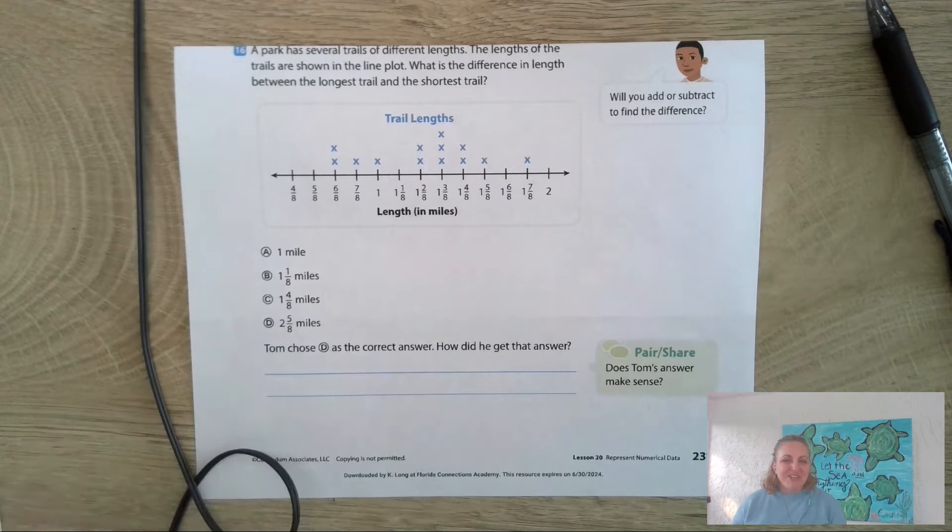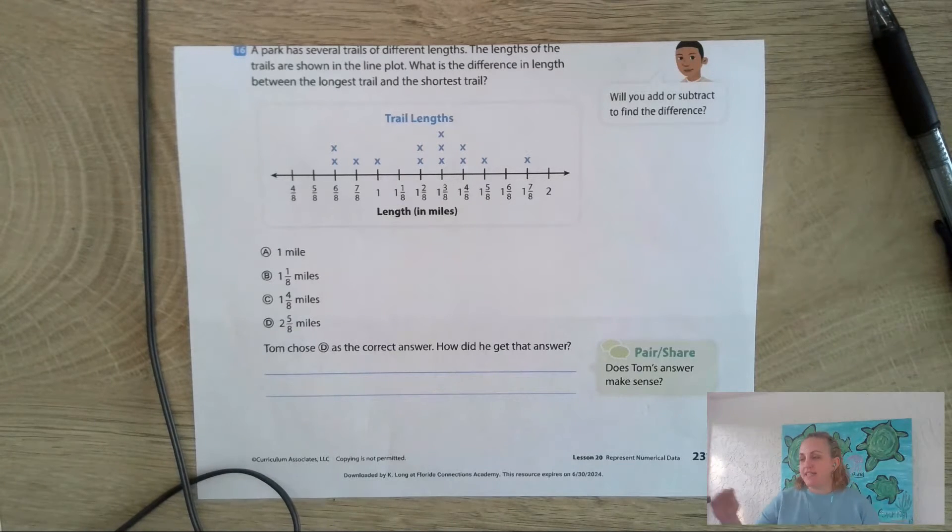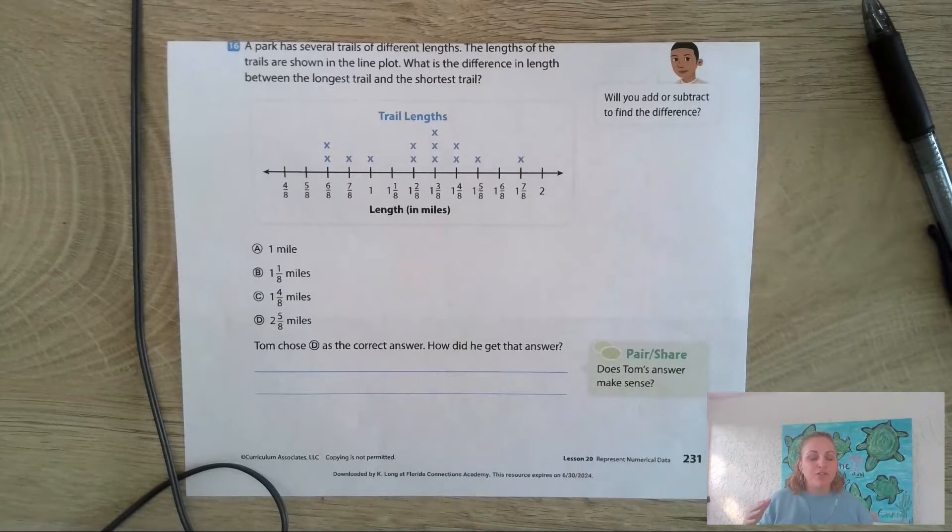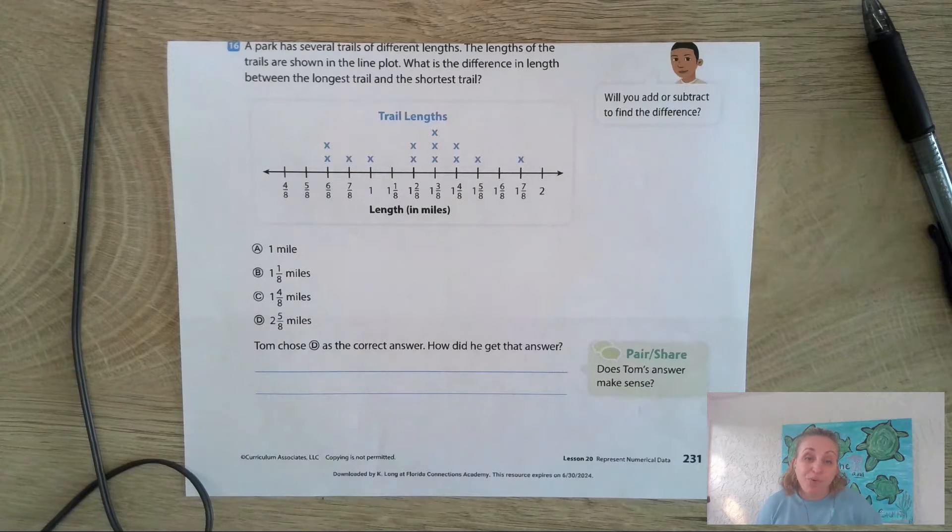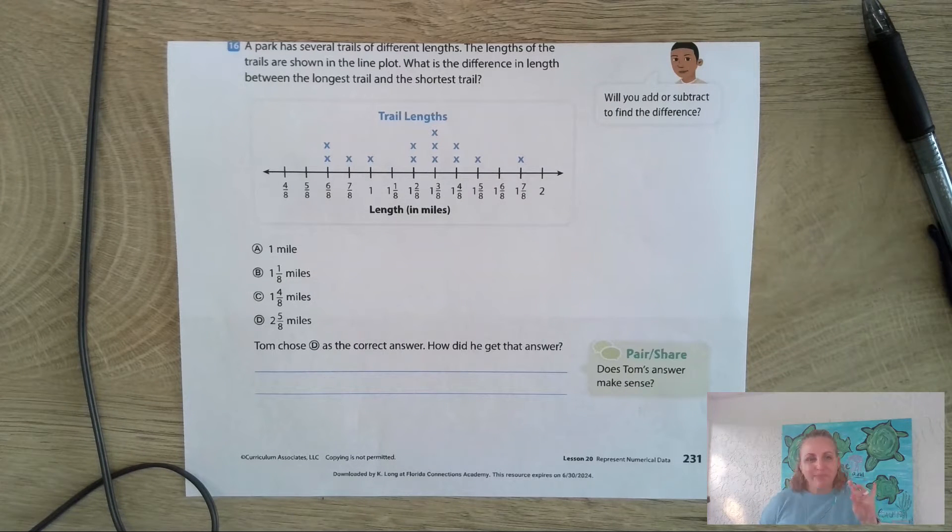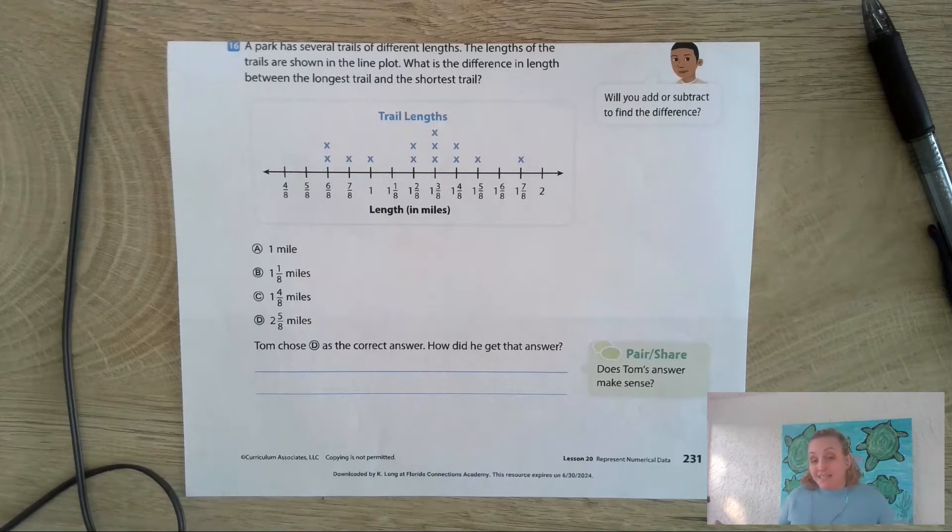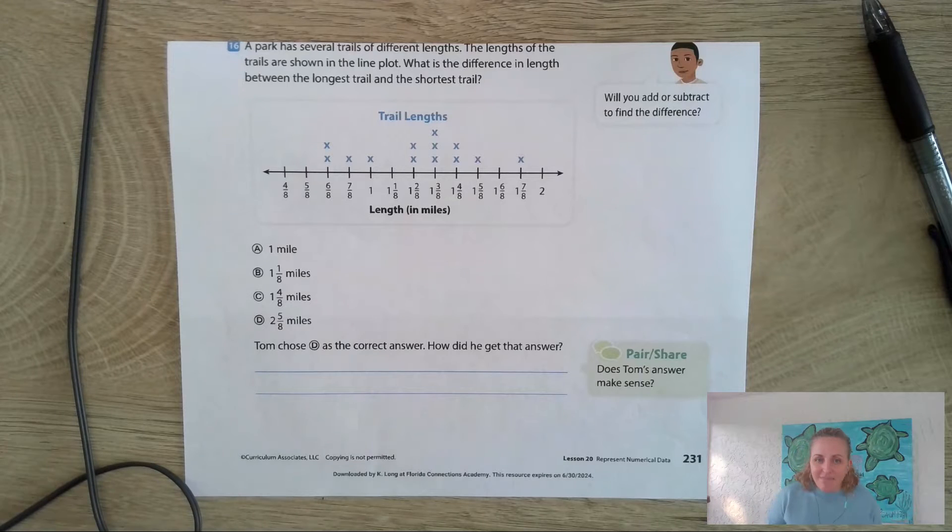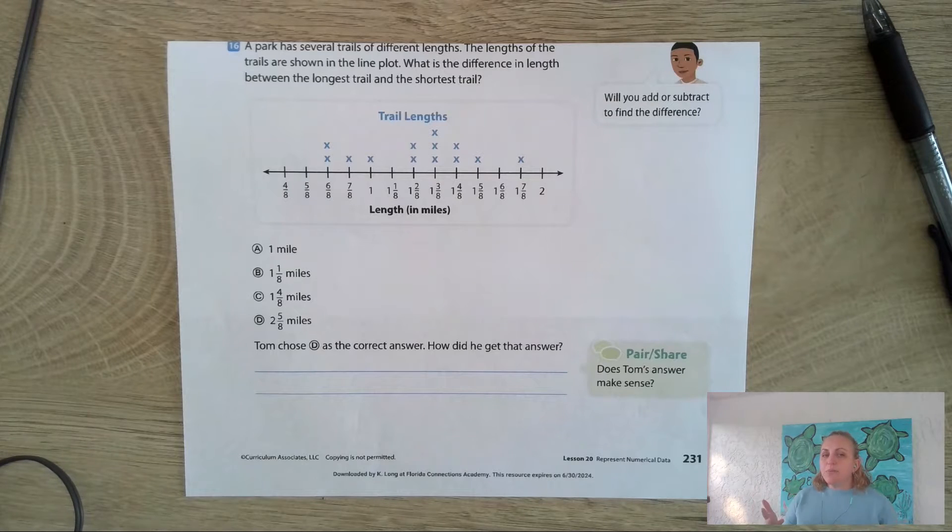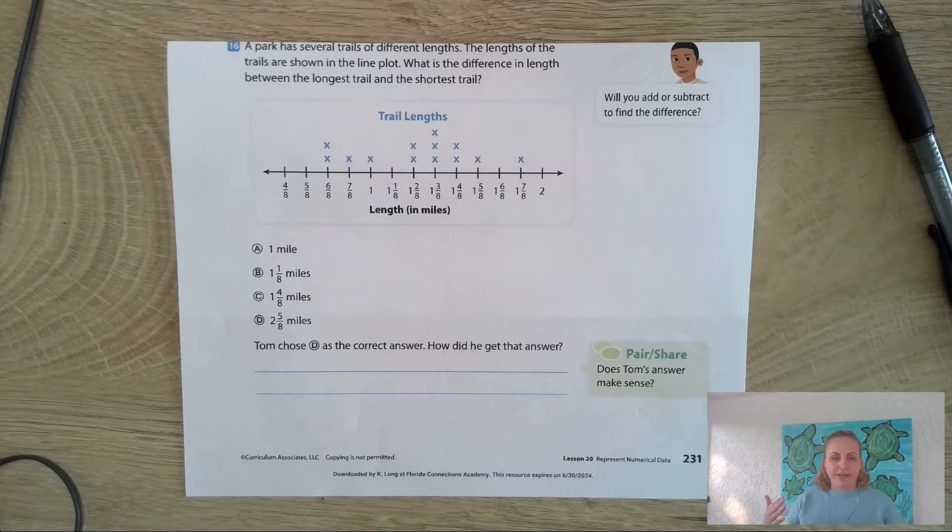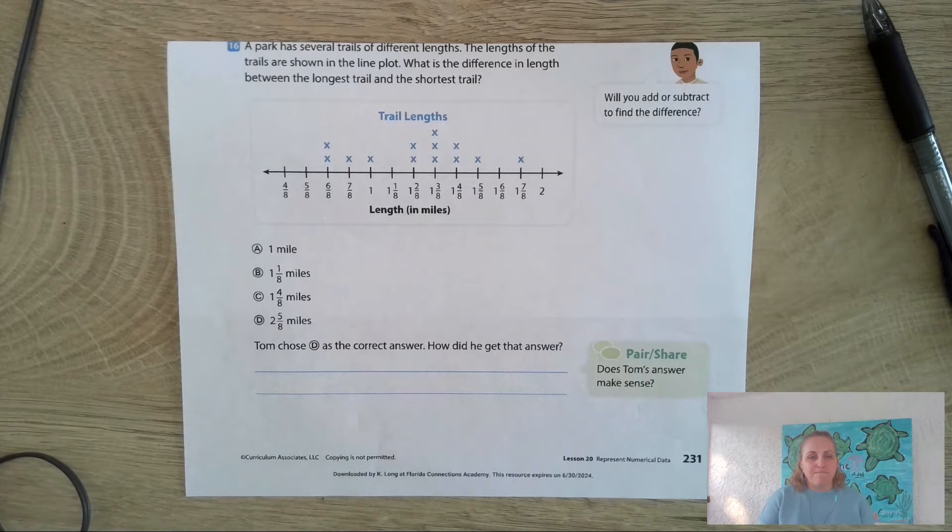Hey fourth graders, so yesterday we worked on finding the median, mode, and range of a data set - just a list of numbers or a table with tally marks representing different numbers. Today we're going to work on the same skills, median, mode, and range, but this time it's going to be off of a line plot.